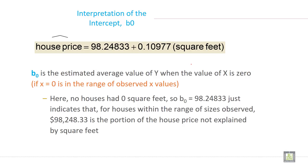b0 is the estimated average value of Y when the value of X is 0, if X equals 0 is in the range of observed x values. Here, no house had 0 square feet.